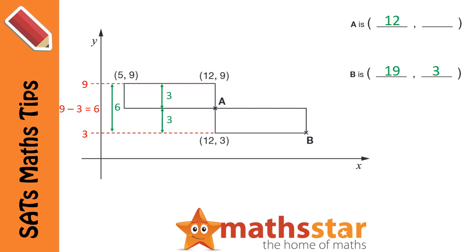This means the height of one rectangle must be 3. So if we go down three places from the top, we find out our y-coordinate for point A, which is 6.